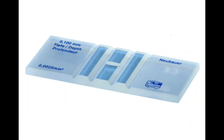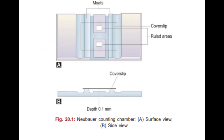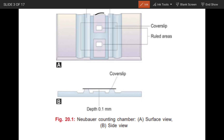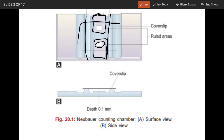This is your Neubauer chamber. This is used for calculation of cells, whether it is TLC or for your fluid examination. We have two moats or wells, and these are the counting areas — two big areas with counter-ruled areas on which we count. A cover slip is placed over it; a specialized, very thick cover slip comes for it, especially just for this counting purpose, to give the exact volume needed and to show the exact distribution of the cells.